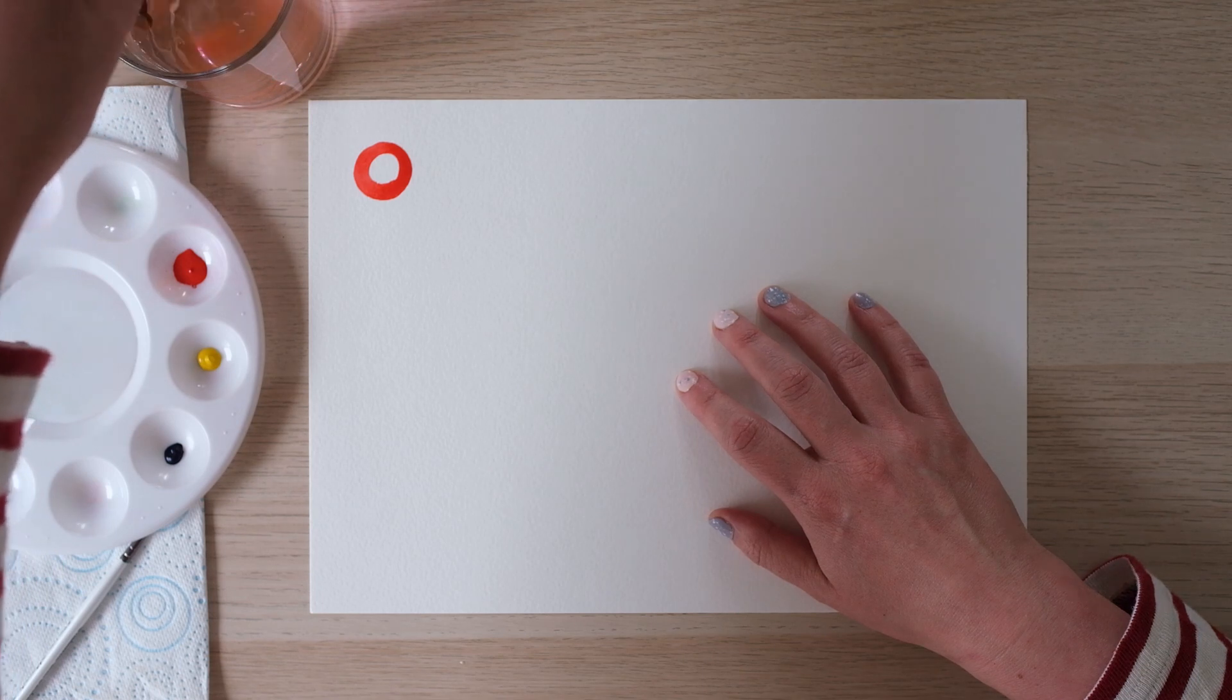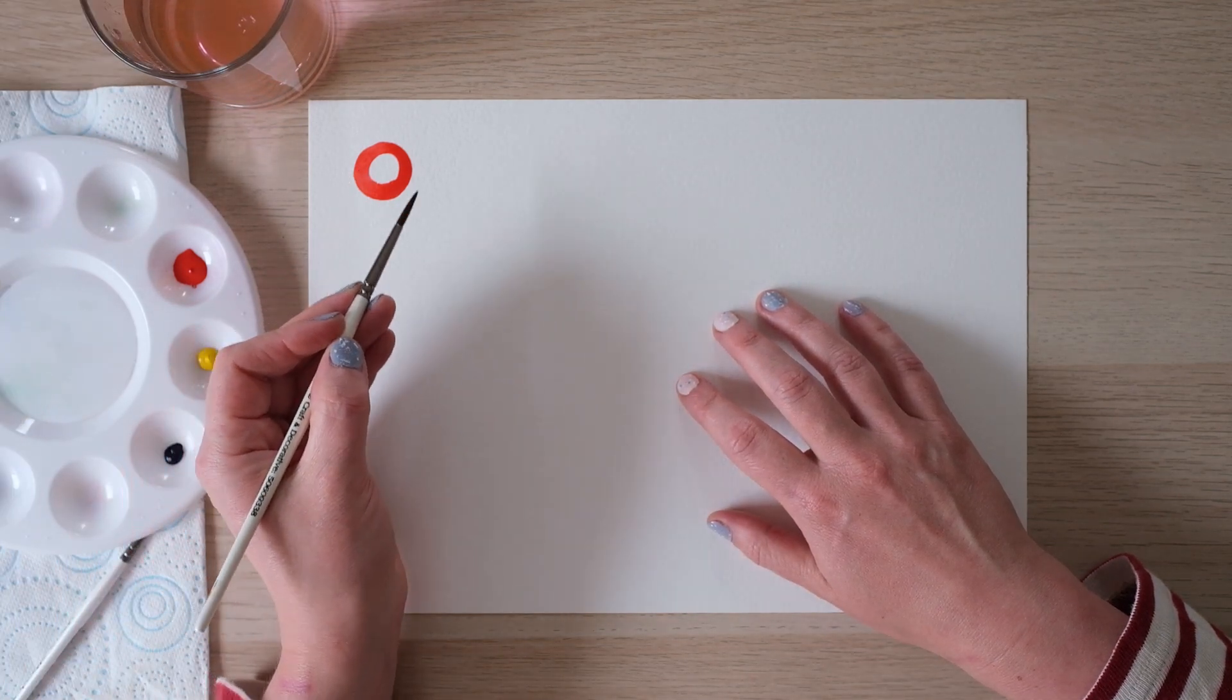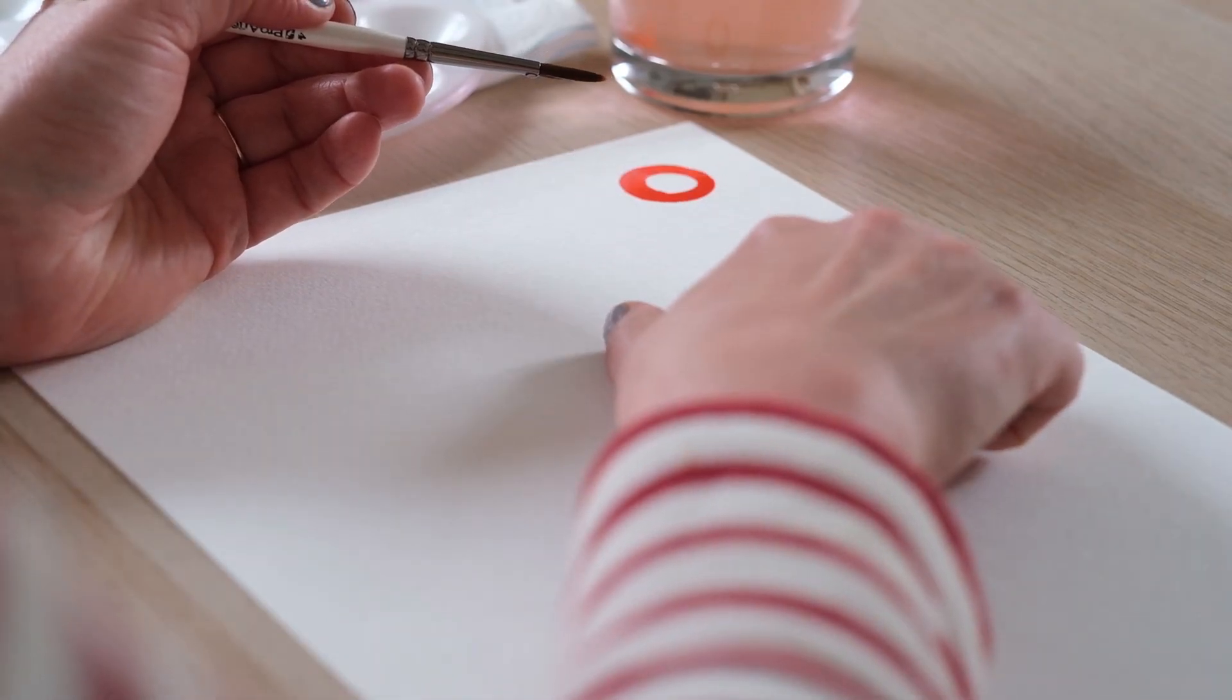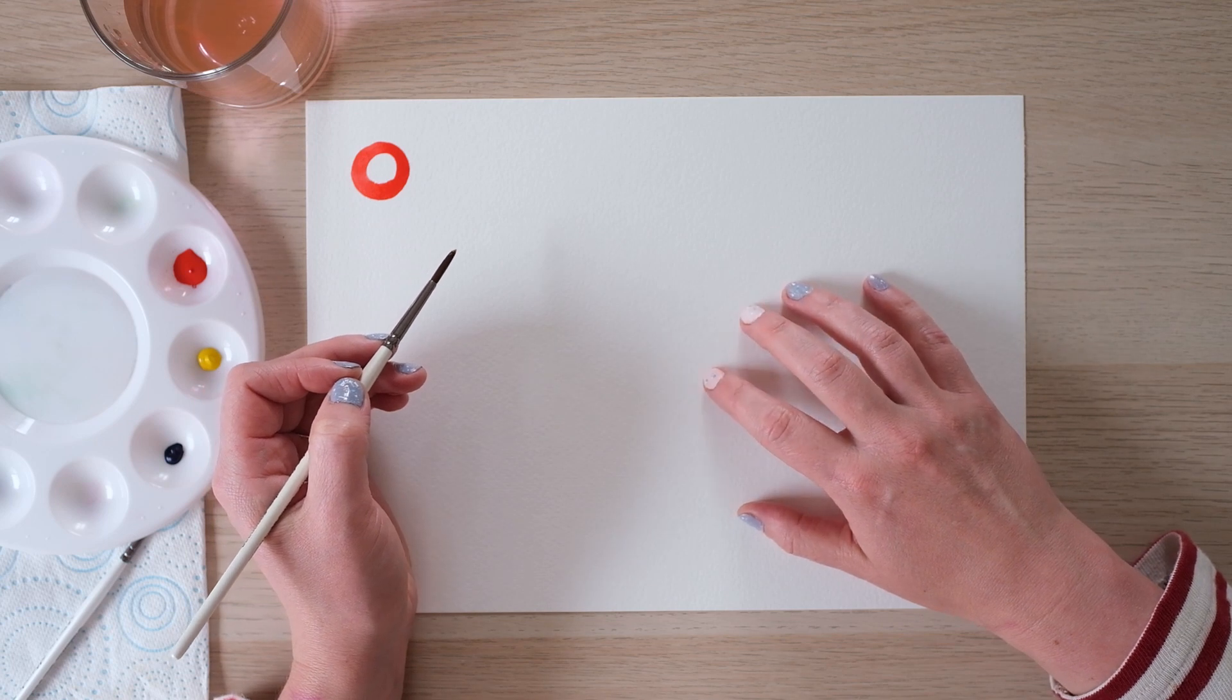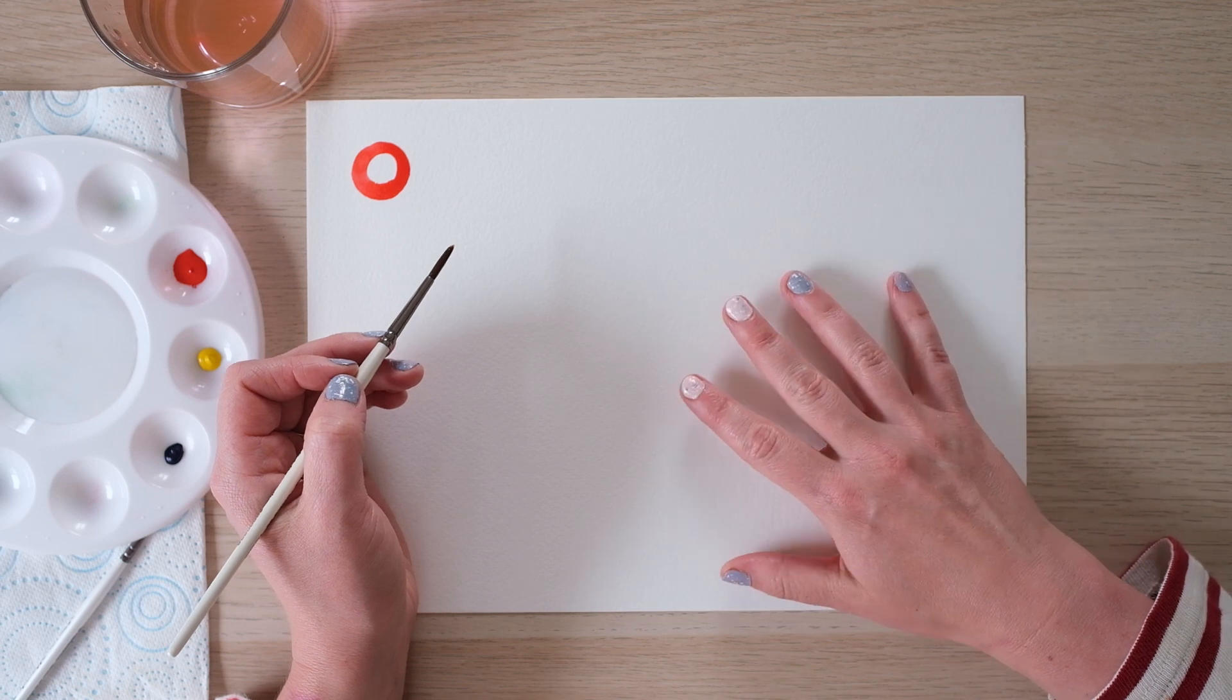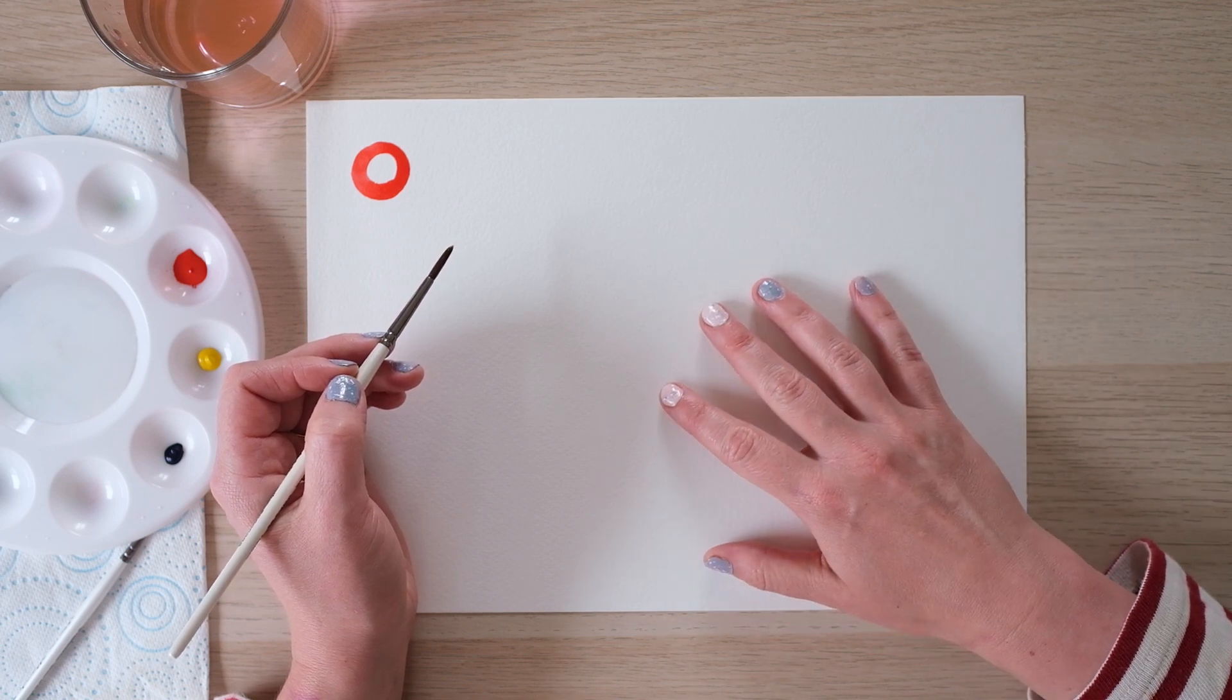Now this is not the most exciting, it's what we call dry on dry because the paper is dry and in terms of watercolour that paint is dry. It's pretty bog standard, not got tons of water on it, nothing's going anywhere is it? It's really staying put.